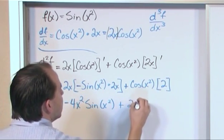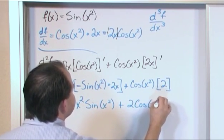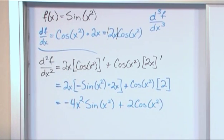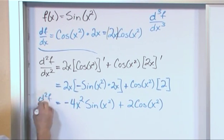the two comes out, cosine x squared, right? So we have negative 4x squared sine x squared or plus 2 times cosine of x squared. So this is d squared f dx squared.